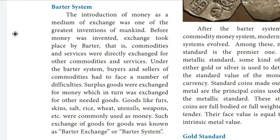Question number 2: What is commodity money? Under the barter system, buyers and sellers of commodities had to face a number of difficulties. Surplus goods were exchanged for money, which in turn was exchanged for other needed goods. Goods like furs, skins, salt, rice, wheat, wooden sticks, weapons, etc. were commonly used as money.